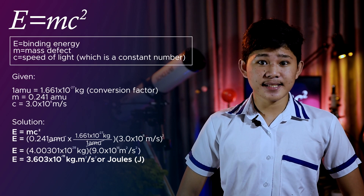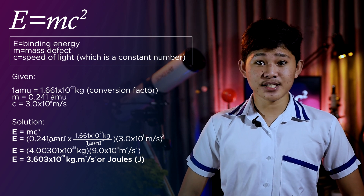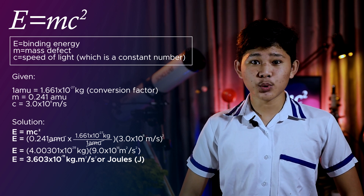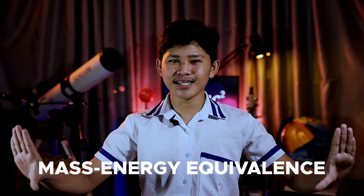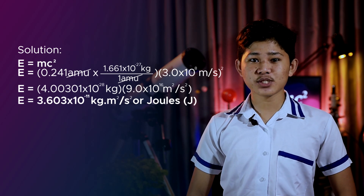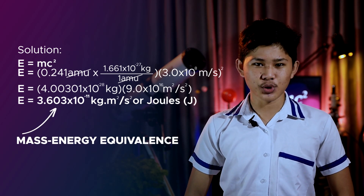Using Einstein's formula for special relativity, E equals mc squared, where E is the binding energy, m is the mass defect, and c is the speed of light, which is a constant value, we can compute the mass-energy equivalence. This gives us 3.603 times 10 to the negative 11 joules.